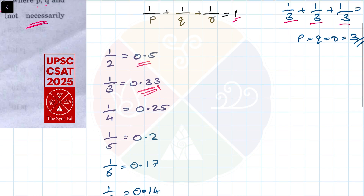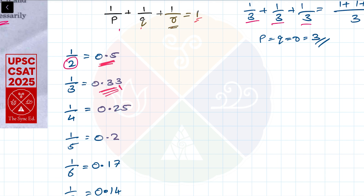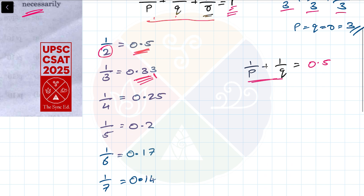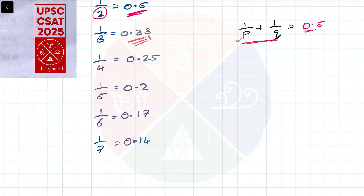Imagine if one of our values — P, Q, or R — is 2, then 1/R = 0.5. So 1/P plus 1/Q must equal 0.5. Looking at the combinations: 0.33 plus 0.25 is more than 0.5, that doesn't work. 0.33 plus 0.17 — let's check. Even 0.5 plus 0.33 would be too much — we need exactly 0.5.